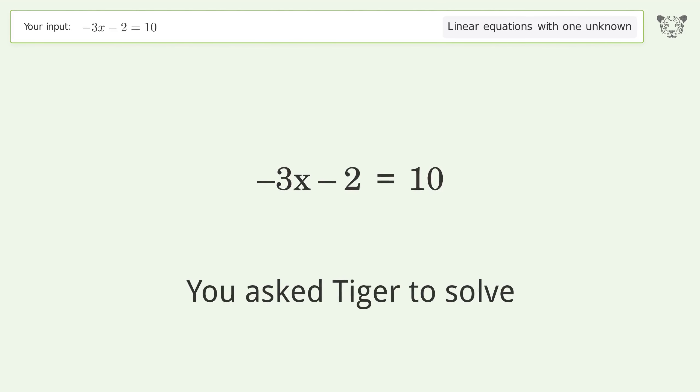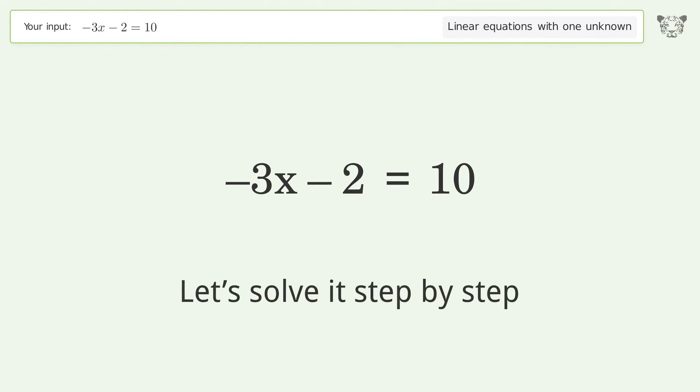You asked Tiger to solve. This deals with linear equations with one unknown. The final result is x equals negative 4. Let's solve it step by step.